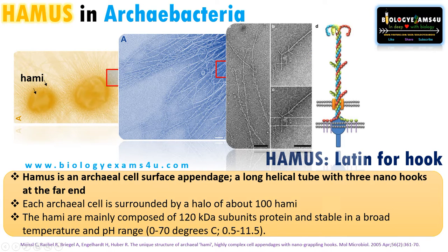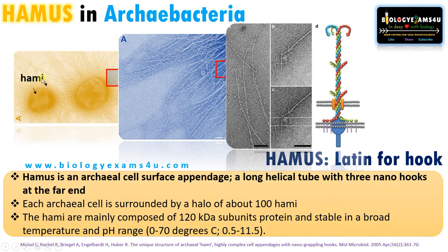When we zoom in further, we can see that these structures end in nano hooks — tripartite hooks — at the far end of this long filament. So hamus is an archaeal cell surface appendage which is a long helical tube with three nano hooks at the far end. Each archaebacteria is surrounded by close to 100 hami.